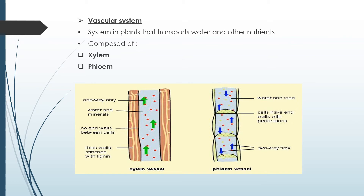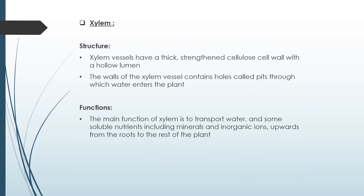In the vascular system, plants have xylem and phloem to supply water and nutrients. The main function of xylem is to transport water and soluble nutrients, including minerals and inorganic ions, upward from the roots to the rest of the plant. Xylem vessels have thick, strengthened cellulose cell walls with a hollow lumen, and the walls contain holes called pits through which water enters the plant.